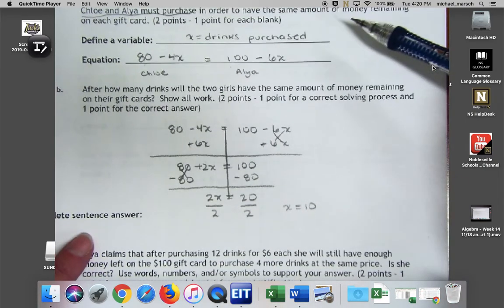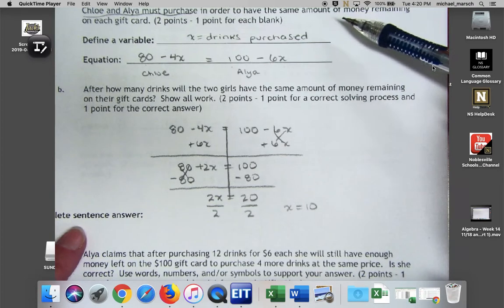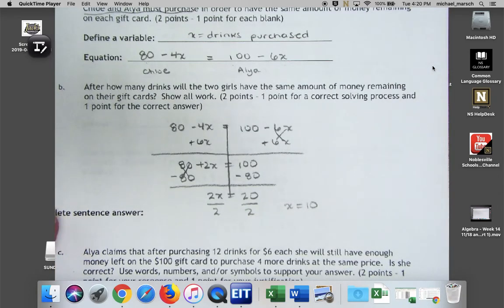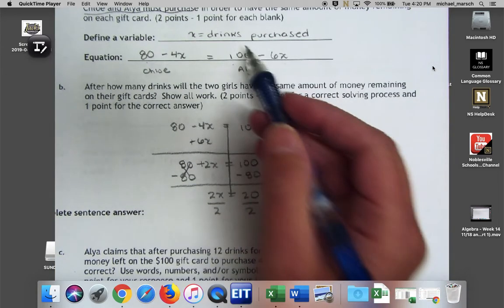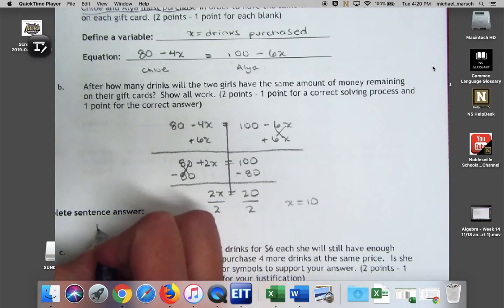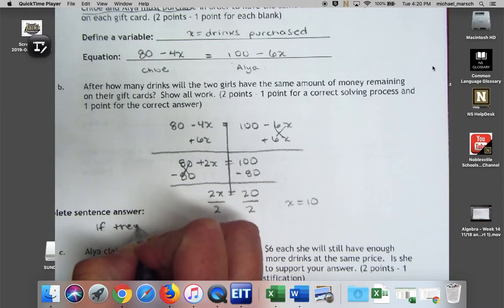So now I need to interpret that into the context of the story because remember I'm trying to determine the drinks they must purchase in order to have the same amount remaining on each card. So this ten was drinks purchased, right? Because x, I named it.